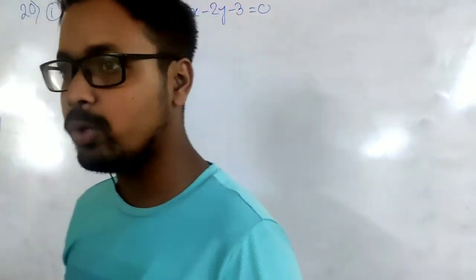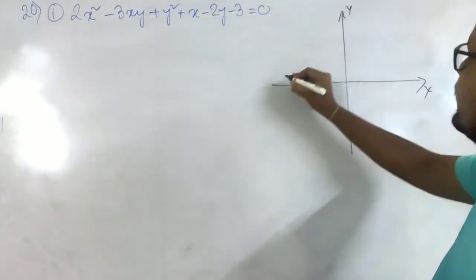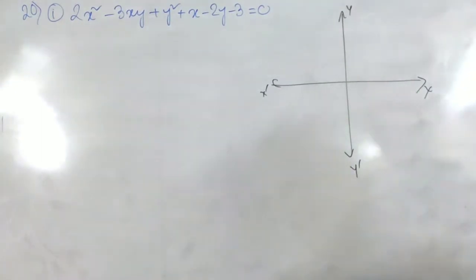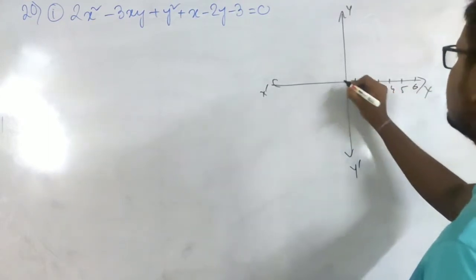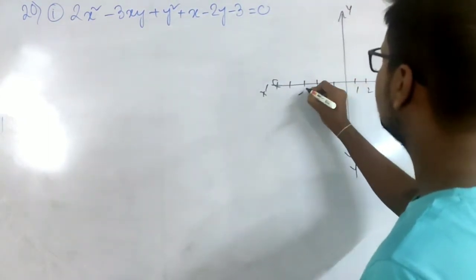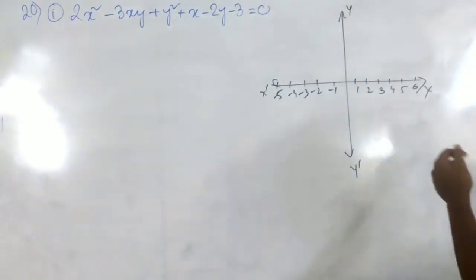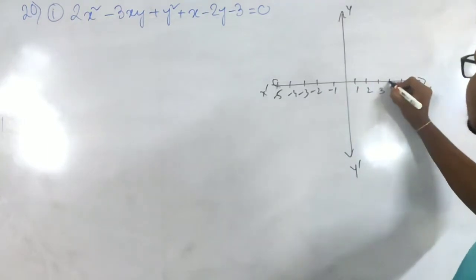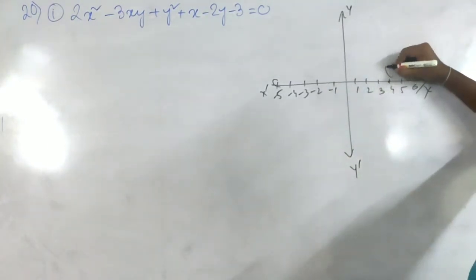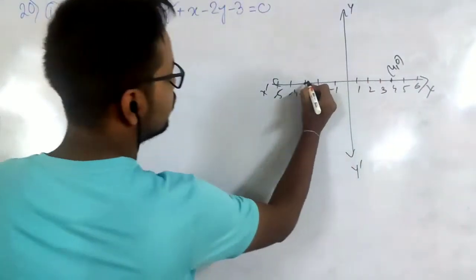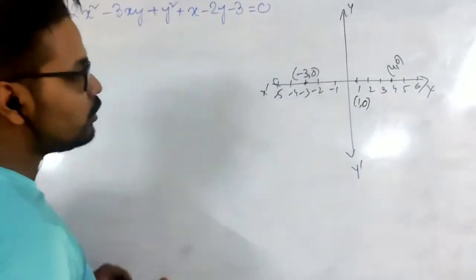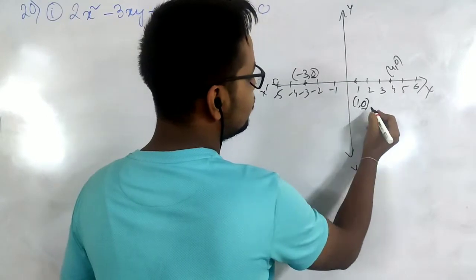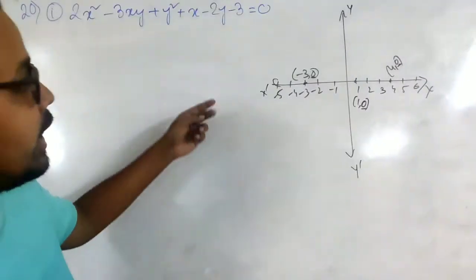To understand what the coordinates will be, let's look at a graph. The x-axis and y-axis are drawn. If we take any point on the x-axis — say point 4 — its coordinate is (4, 0). A point at -3 on the x-axis is (-3, 0), and a point at 1 is (1, 0). The common observation is that the y-coordinate is always 0 for any point on the x-axis.